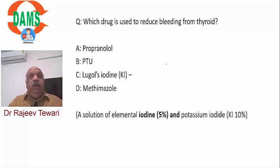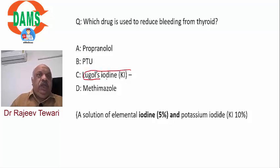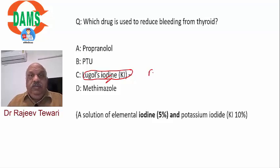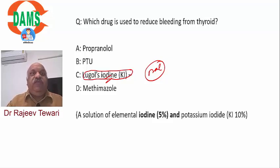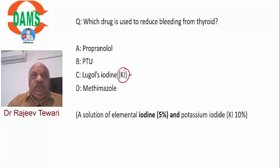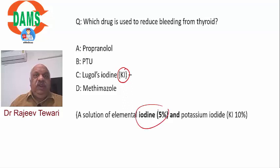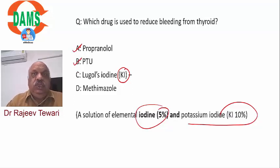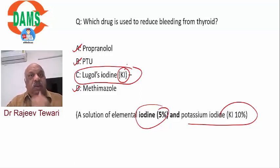Which drug reduces bleeding in thyroid surgery? Lugol's iodine (potassium iodide solution: 5% iodine + 10% potassium iodide) is given orally for 2-3 weeks pre-operatively to make the thyroid more fibrous and less vascular, thus reducing intraoperative bleeding. Second indication for potassium iodide: thyrotoxic storm - it prevents conversion of T4 to T3. In thyrotoxic storm, if oral route is unavailable, sodium iodide can be given IV. Propranolol controls tachycardia. Pre-operatively, the patient must be made euthyroid with antithyroid drugs.